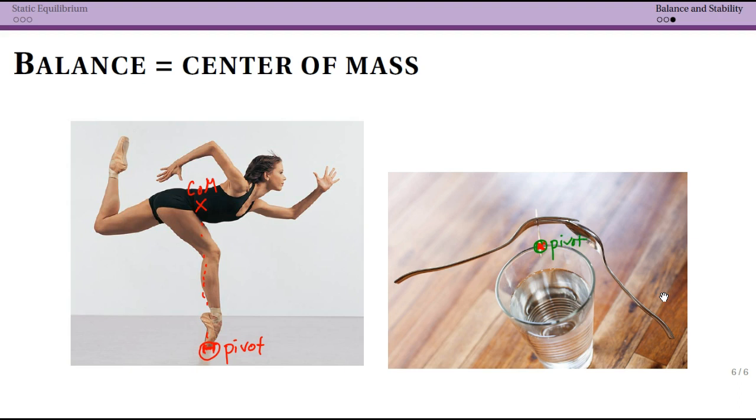So your pivot points and your center of mass must be in the same place. Now note that in this case, the center of mass is occurring in a place where the fork and spoon aren't. That's okay.